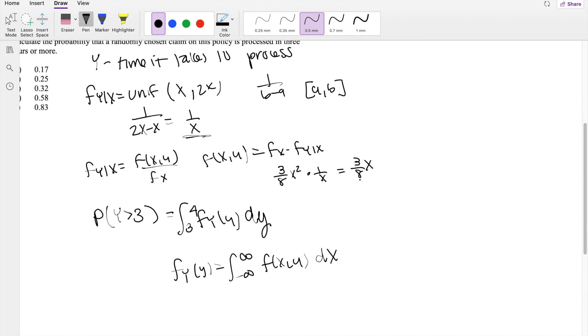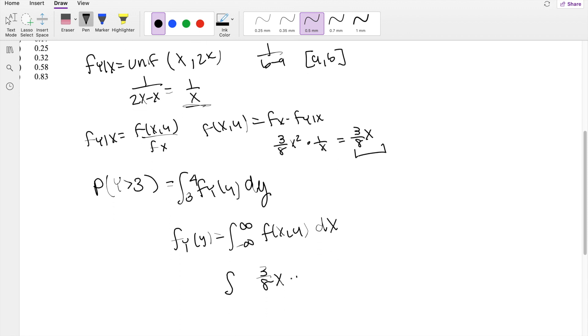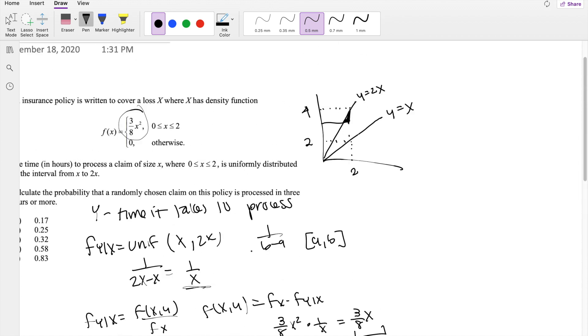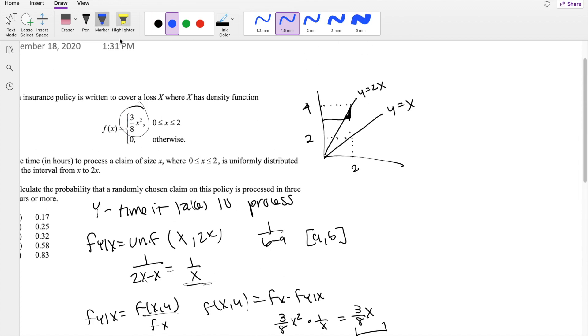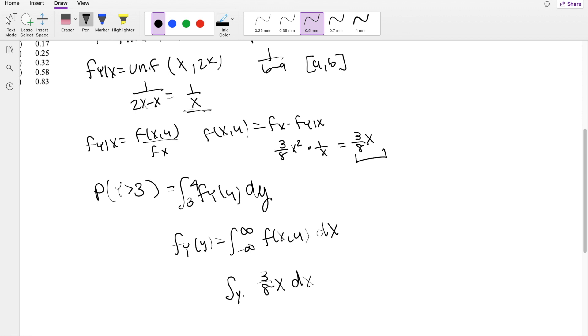So integrating, we know f(x,y) is given here, so that's 3 over 8x dx. And what is the range? So this one's a little bit tricky. If we're integrating with respect to x, like this way, then the lower limit is going to be this line here, which is y equals 2x. But if we're integrating with respect to x, we can solve this for x. So this equals x equals y over 2. That's the lower limit, y over 2.